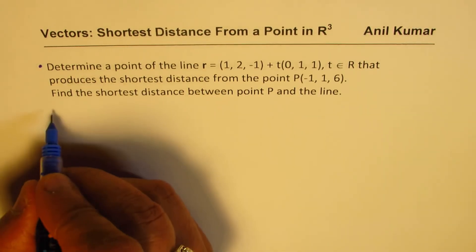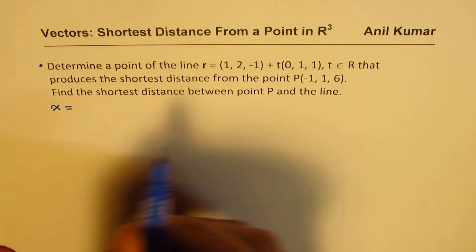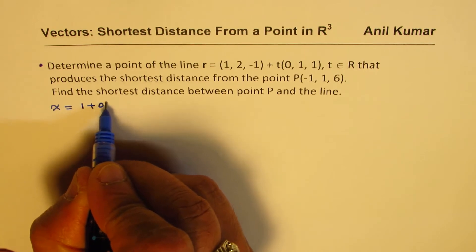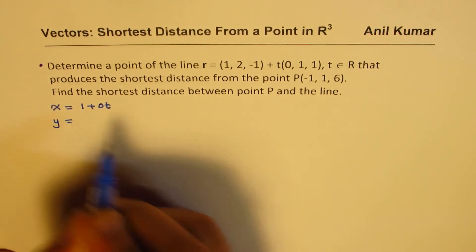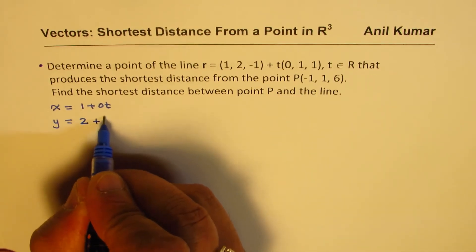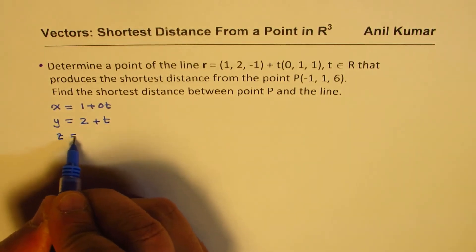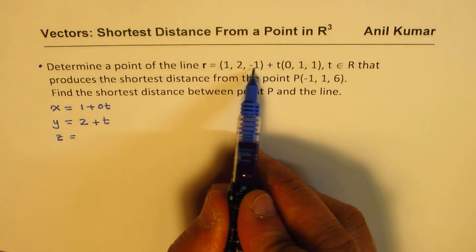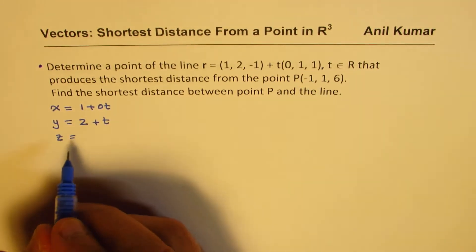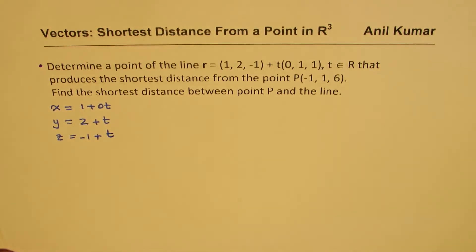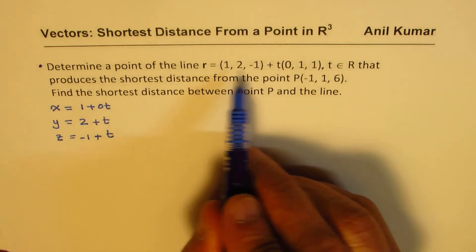From the given equation, we can say: x = 1 + 0·t = 1, y = 2 + t, and z = −1 + t. That becomes a general point on our line.